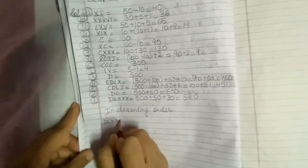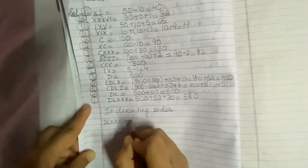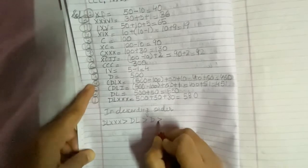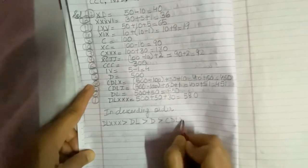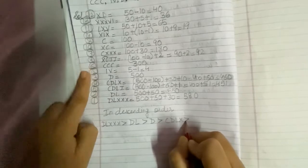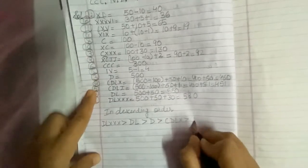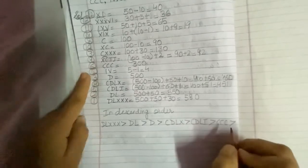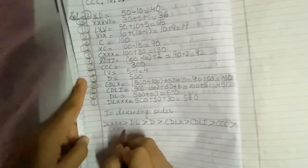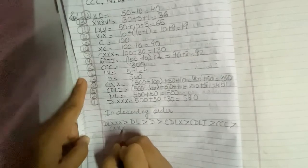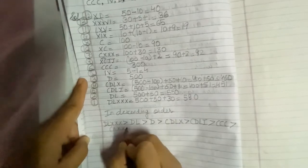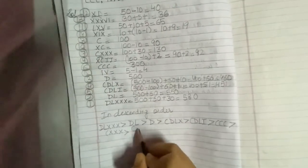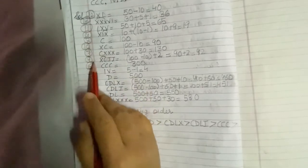Writing the Roman numerals in descending order: DLXXX is greater than DL is greater than D is greater than CDLX is greater than CDLI is greater than CCC is greater than CXXX is greater than C is greater than XCII is greater than XC...